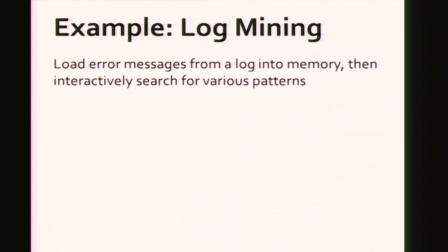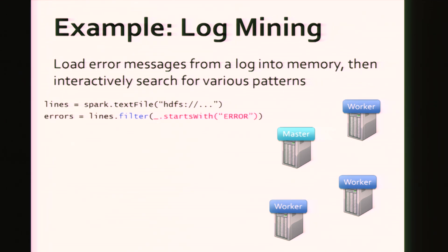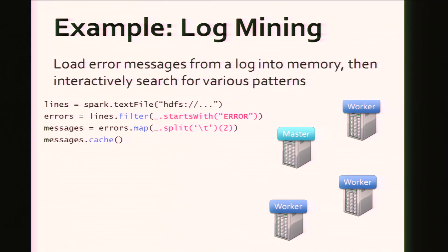I'll show you what it looks like to actually use Spark to query data. You can use it interactively from a console or write a standalone program. Here I'm showing what you might type interactively to load a bunch of error messages from logs into memory and ask some questions. We have a cluster here with a master and some workers. We start with a text file in the Hadoop file system, HDFS, which is a distributed file system. Then you can do transformations — here we're filtering the lines that start with 'error' to pull out only the error messages. Next you can do a map, split them by tabs, and pull out field number two, which is maybe the actual message. And the final thing you might do is cache just these error messages in memory.